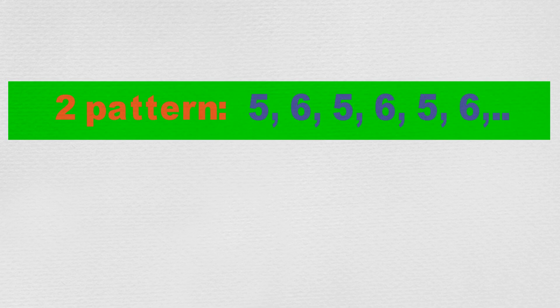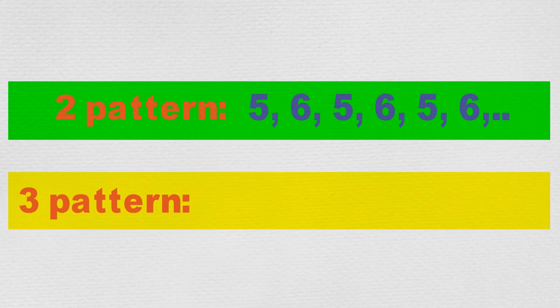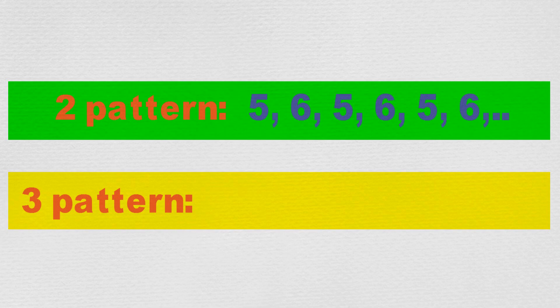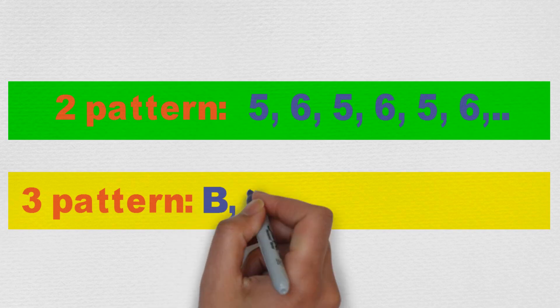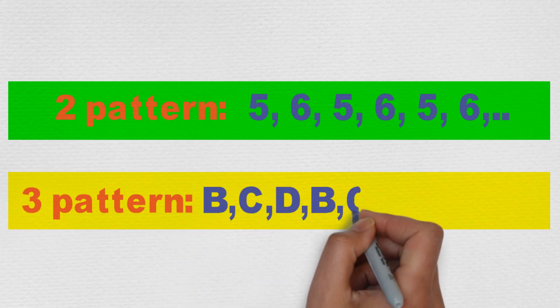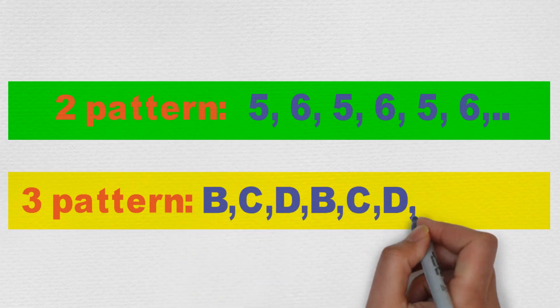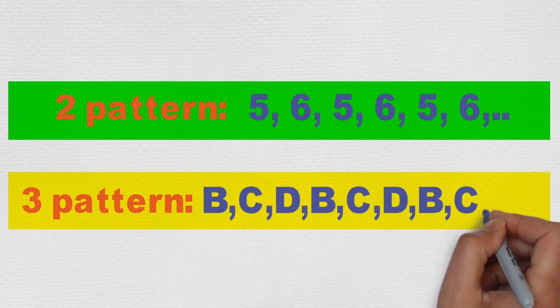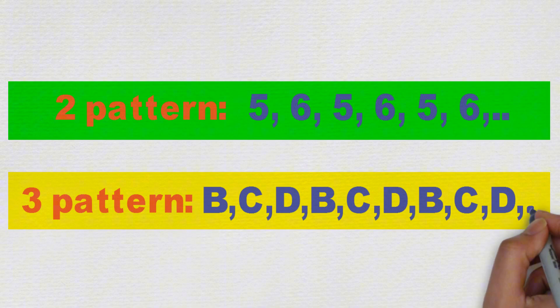Sometimes we have three things repeating — a three-pattern — such as B, C, D, B, C, D, B, C, D, B, C, D.